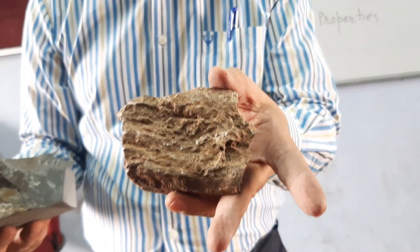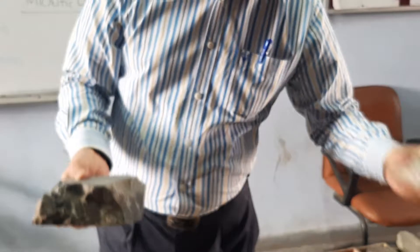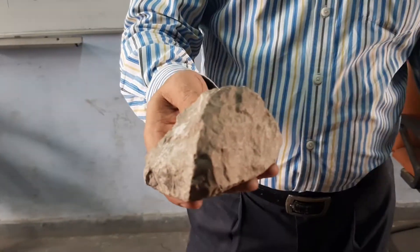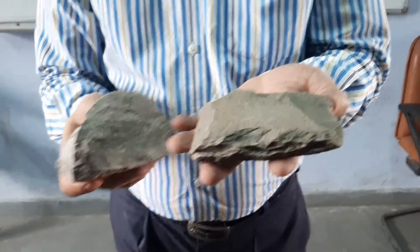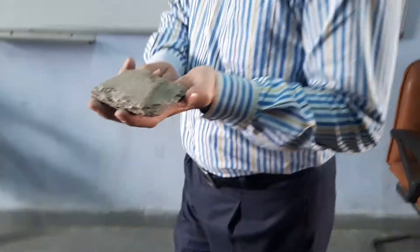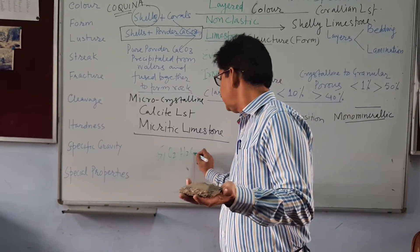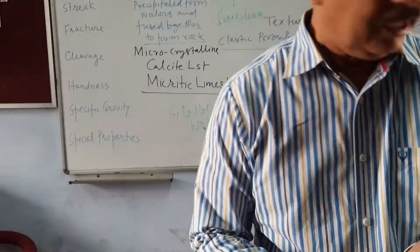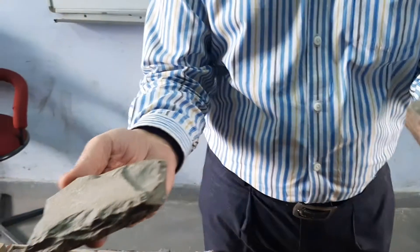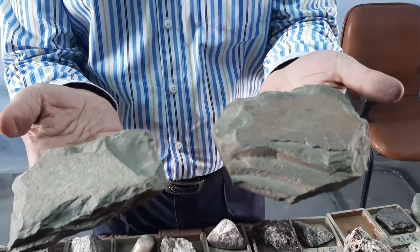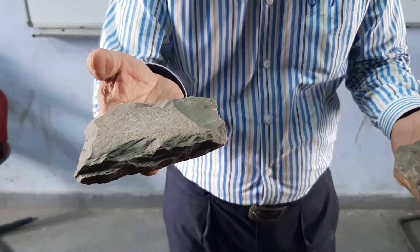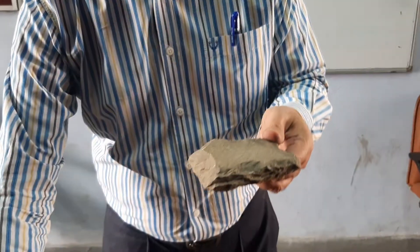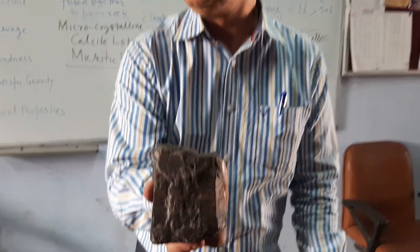This surface is highly weathered because it was exposed to the atmosphere. We also have this cherty limestone — chert is another group of sedimentary rock which precipitates from water, that is silica precipitation. If SiO₂ precipitates, it will give you a rock that is called chert. This is a highly siliceous rock. If you compare this mudstone and this chert they look alike, but chert has very high strength. Chert is also a non-clastic sedimentary rock.